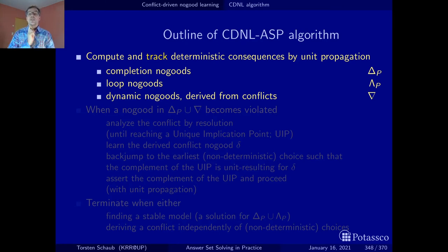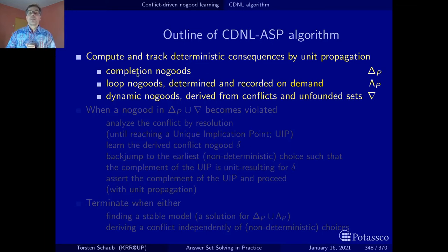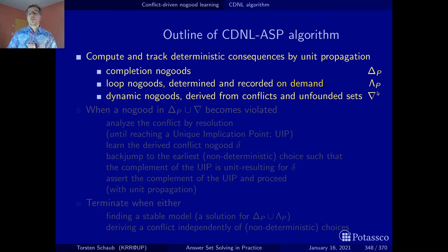This is very important because we need this afterwards to derive a nice representation of a conflict — that is, a conflict no-good. One thing particular to ASP is that while the completion no-goods are polynomial in the atoms and rules in the program, there may be an exponential number of loop no-goods.